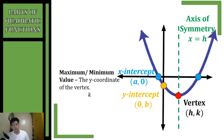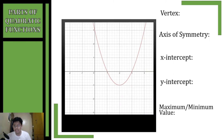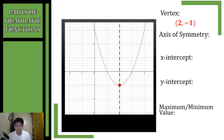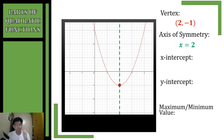Let's have an example. Given this graph, we're going to identify the parts. First, the vertex is located at the coordinate (2, -1). To get our axis of symmetry, we take the x-coordinate of our vertex and write it as an equation: x = 2.